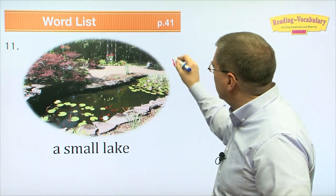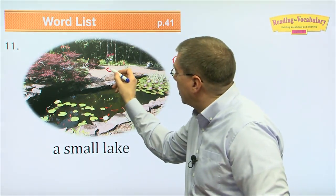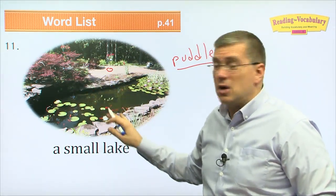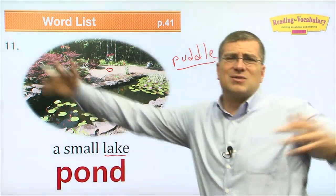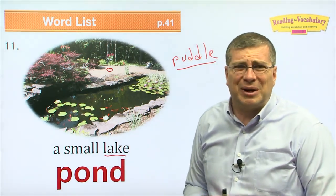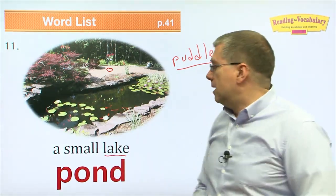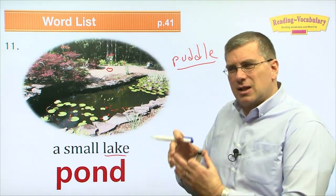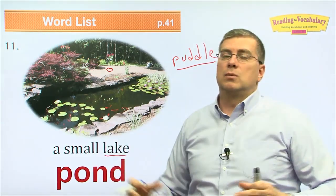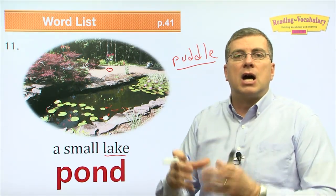A pond is a small body of water — not a puddle. A puddle is very small and goes away when the sun comes out. A pond stays and is larger than a puddle, but smaller than a lake. You can swim in a lake; don't swim in a pond — it's too small and might be dirty. From smallest to largest: puddle, pond, lake, sea, ocean.